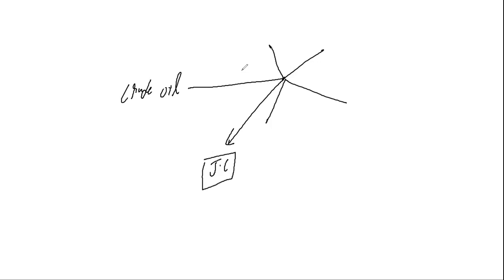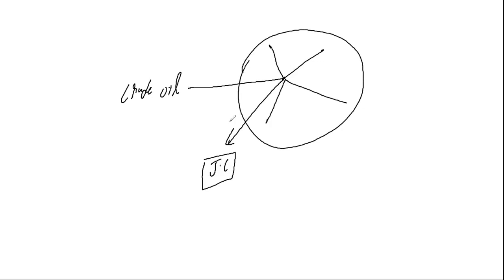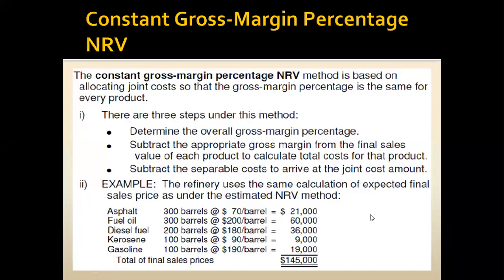Today we are discussing the fourth method, which we call the constant gross margin percentage method. There are three steps we need to perform. Let me guide you first about the three steps, give you some idea, and then we will apply these three steps.